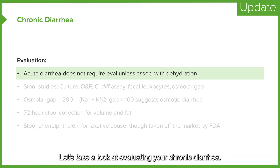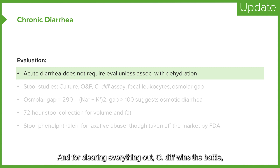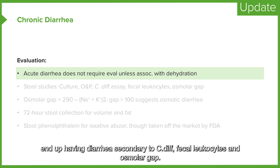Let's take a look at evaluating chronic diarrhea. Stool studies: culture, O and P — which stands for ovum and parasites — and C. diff assay, perhaps if you're suspecting a patient in a hospital on antibiotics, therefore clearing everything out so C. diff wins the battle, ending up with diarrhea secondary to C. diff. Also fecal leukocytes and osmolar gap.